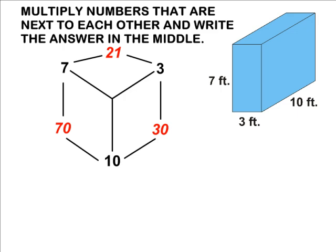It does not matter where you wrote the 3, the 7, and the 10 because you will still come up with the same three numbers 70, 30, and 21 no matter what order you actually write the original three dimensions.